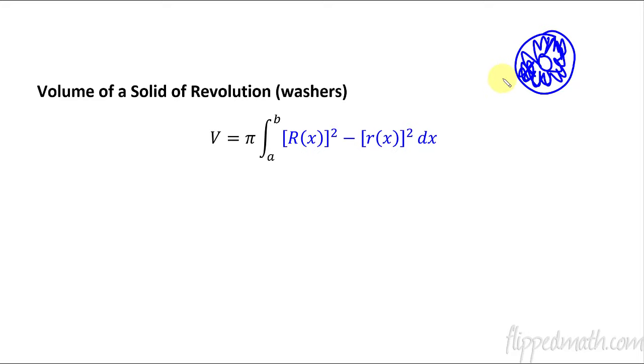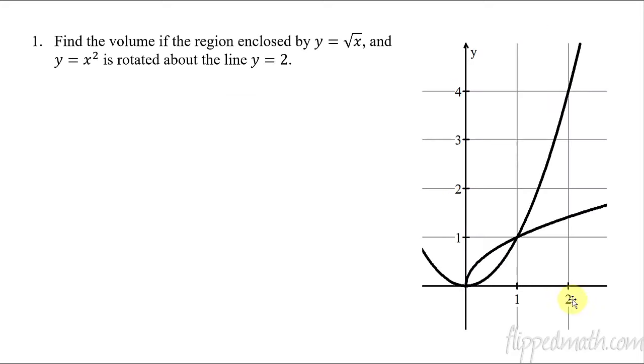Today, we're going to take these revolutions and instead of doing it around the x or y axis, we are now going to do it around a new line. So on this first problem, let's do it around the line y equals two. Draw yourself a dashed line at y equals two. And we're revolving this thing this direction. So let's take our area that's enclosed by the square root of x and x squared, and we need to create a mirror image.